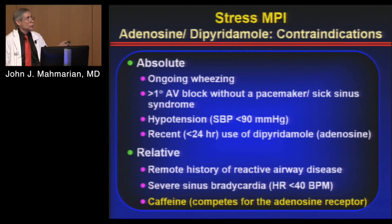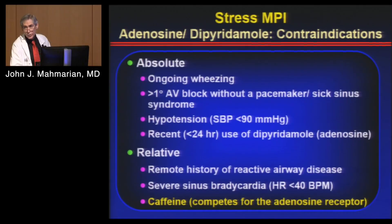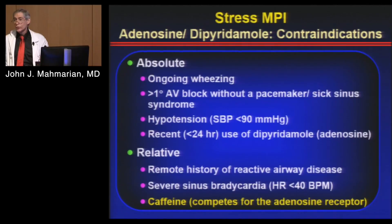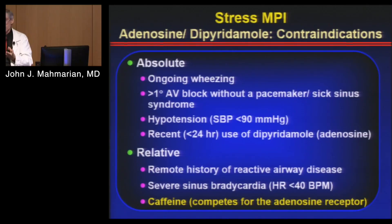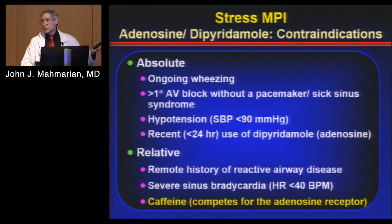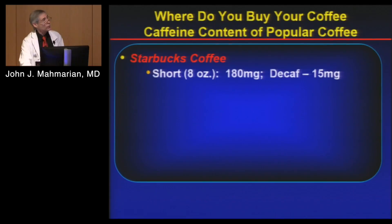Absolute contraindications to adenosine and dipyridamole are ongoing wheezing, greater than first degree AV block without a pacemaker, hypotension, and recent use of dipyridamole in patients getting adenosine — since dipyridamole augments adenosine levels. Relative contraindications are remote history of reactive airway disease, severe sinus bradycardia, and caffeine, because caffeine competes for the adenosine receptor. Depending on how much circulating caffeine versus adenosine molecules you have, caffeine can block enough receptor binding to prevent adequate vasodilation.